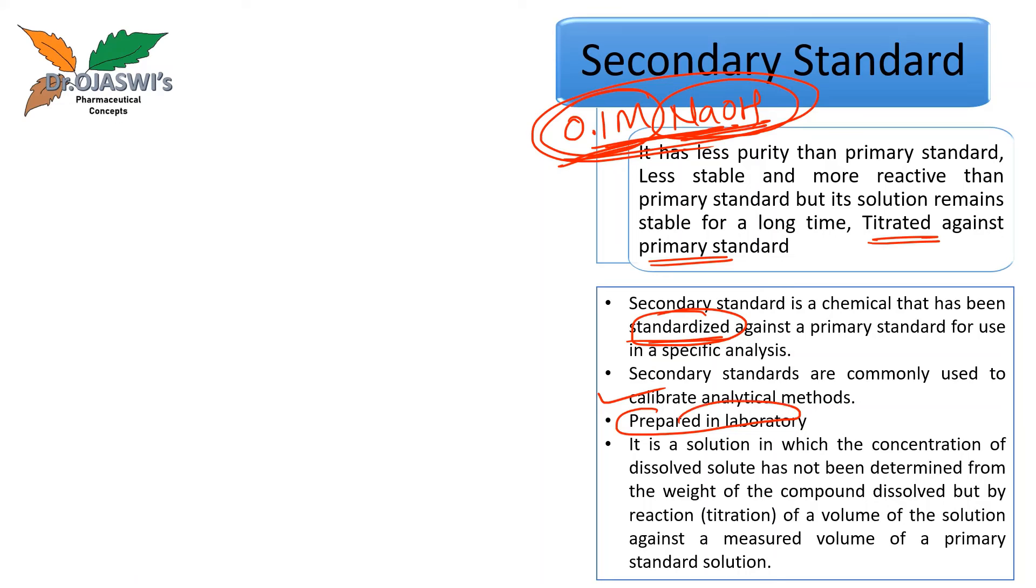Secondary standards are commonly used to calibrate analytical methods. These are prepared in laboratory. I have prepared this 0.1 molar NaOH in laboratory by weighing this NaOH pellet and by dissolving it in suitable volume of water. It is a solution in which the concentration of dissolved solute, for example, if I am talking about the same example of 0.1 molar NaOH, so here solute means the NaOH, so concentration of NaOH in this 100 ml 0.1 molar sodium hydroxide solution can be determined not from the weight of NaOH, which I have added in this 100 ml of water, but by reacting it, by reaction of a volume of solution against a measured volume of primary standard solution.